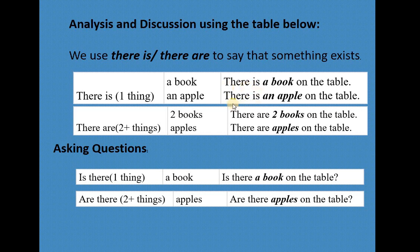Another example: 'There is an apple on the table.' We use 'there is' here because we are talking about only one apple. Bear in mind that we use 'there is' for only one thing.